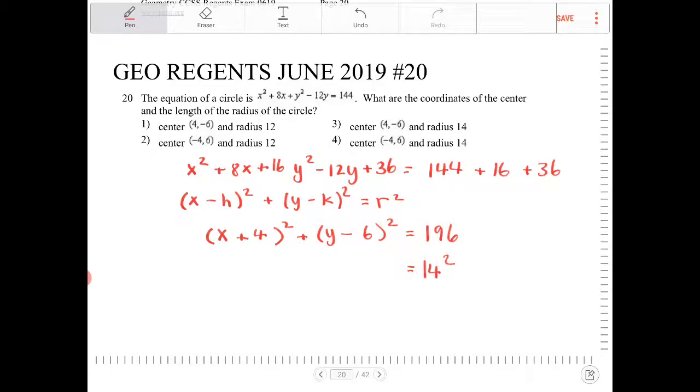So, what is the center and radius of the circle then? Just looking at this, we can identify the center to be negative 4 and 6 and the radius to be 14. And which option does that fit? That would be option number 4.